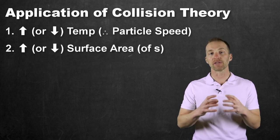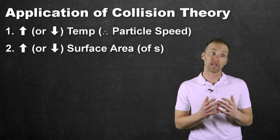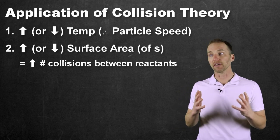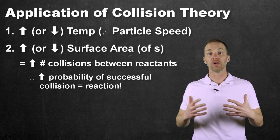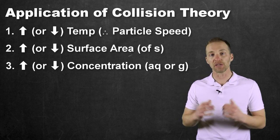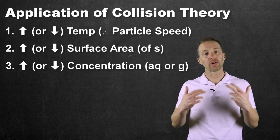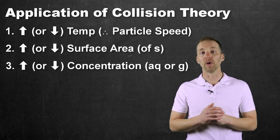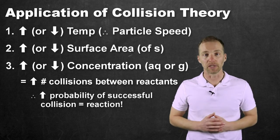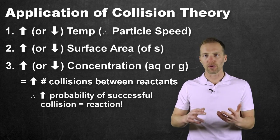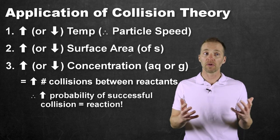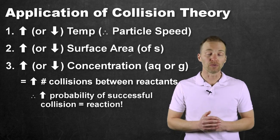We can also increase the surface area of a solid within a gaseous, aqueous, or liquid system, which increases the exposure of that solid to the surrounding medium and further increases the number of collisions. A third way is to increase the concentration of a substance, especially in an aqueous solution or a gas. Increasing concentration raises the number of moles of that substance in the environment, which increases the probability of collisions and the likelihood of a successful reaction. Temperature, concentration, and surface area all allow us to control a chemical reaction by increasing or decreasing the likelihood of collision.